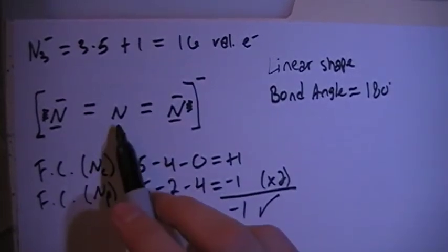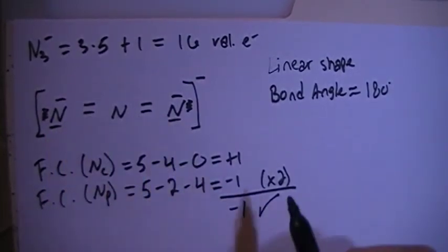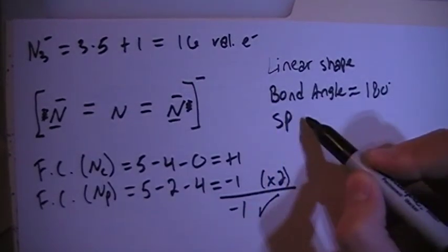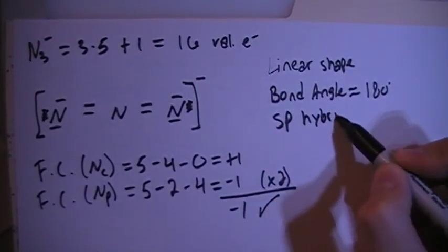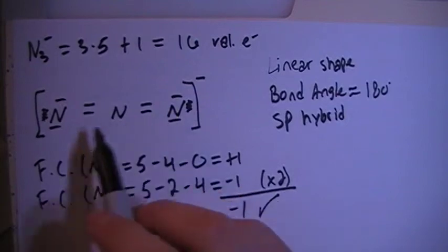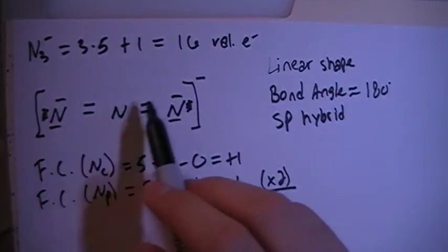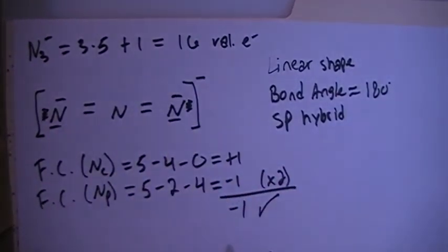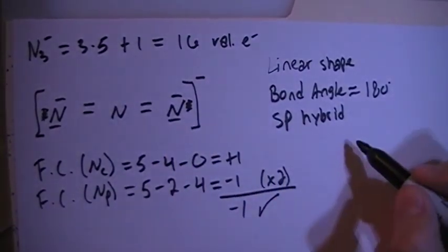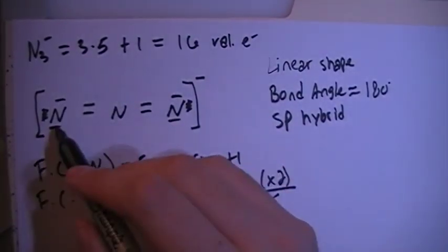Looking at the central nitrogen here, there's 1, 2 bonding sites, which means SP hybrid. If you want to look at the other sites, there would be 1, 2, 3, 1, 2, 3 bonding sites, which means SP2 for this nitrogen and this nitrogen.